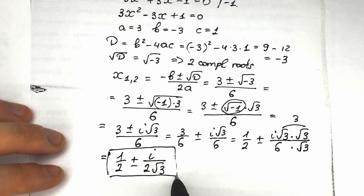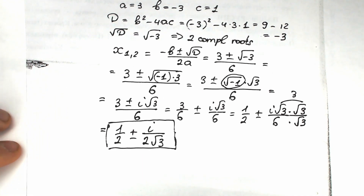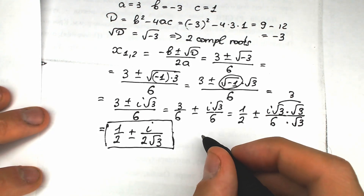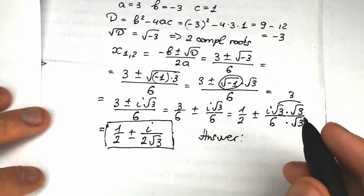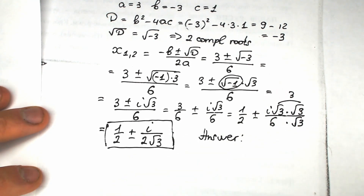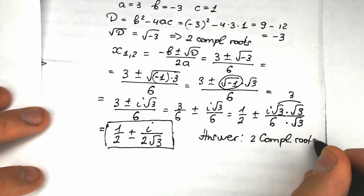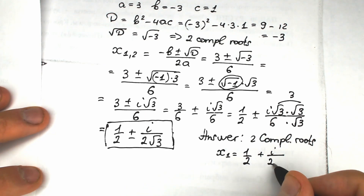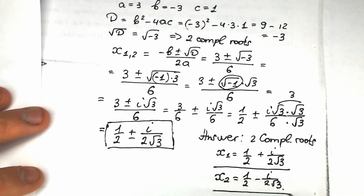So our final answer has two complex roots — no real number roots. The first root is x₁ equals one half plus i over two square root of three, and the second root is x₂ equals one half minus i over two square root of three. This is our answer to the challenge.